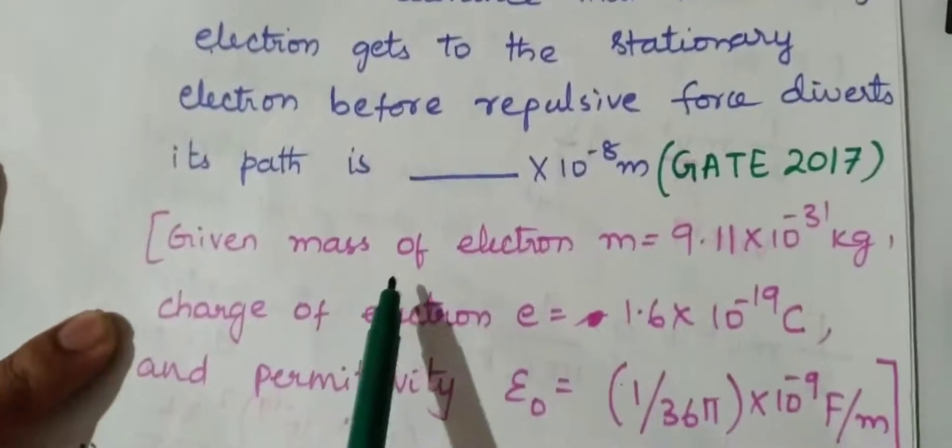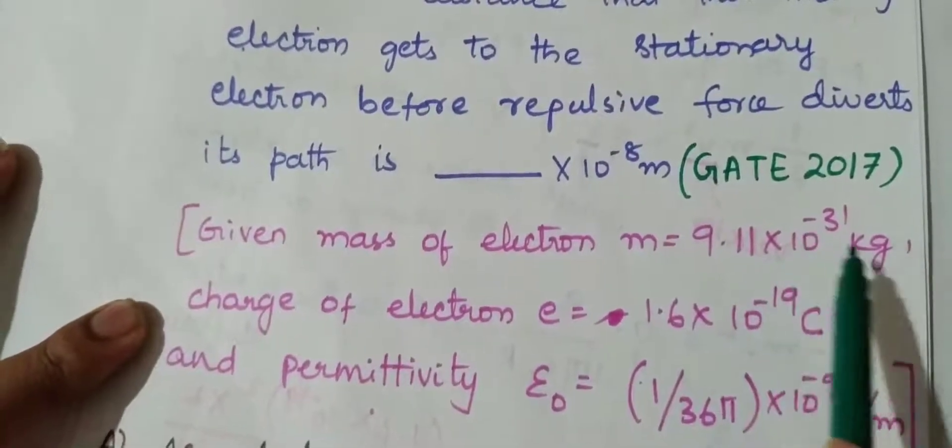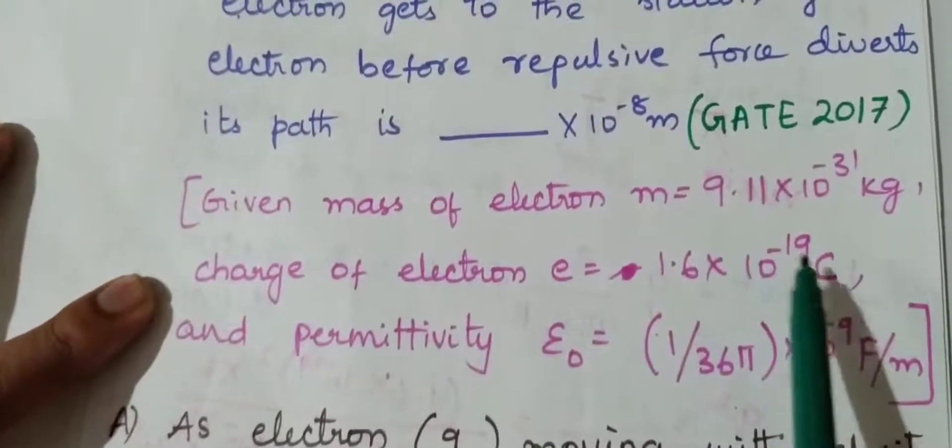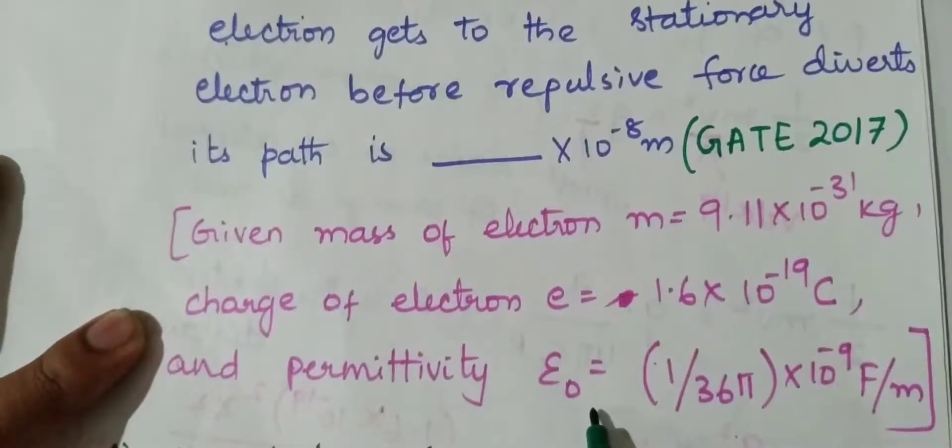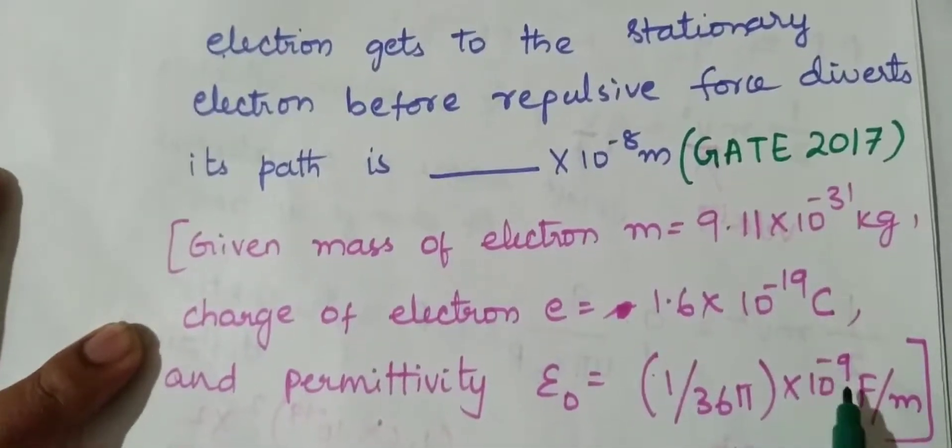Given: mass of electron m is equal to 9.11 into 10 power minus 31 kg, charge of electron e is equal to 1.6 into 10 power minus 19 coulomb, and epsilon naught is equal to 1 by 36 pi into 10 power minus 9 farads per meter.